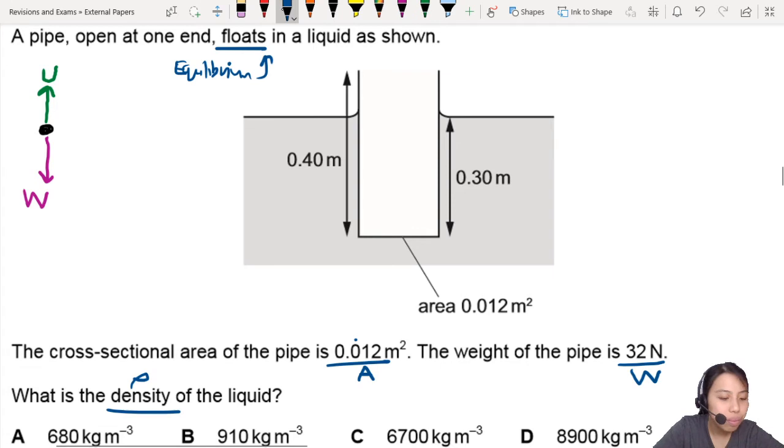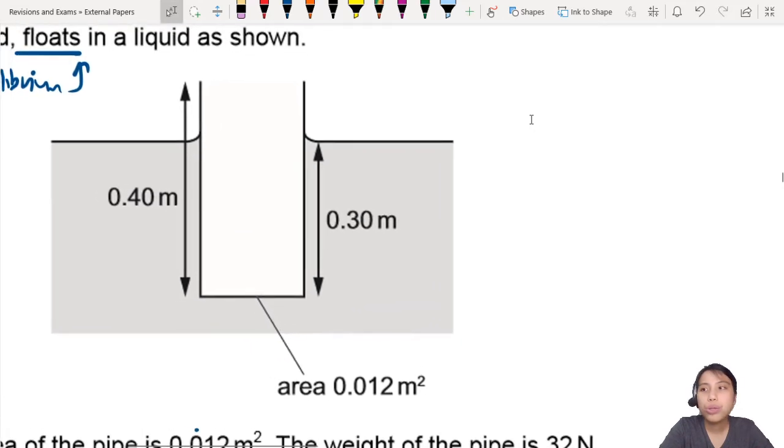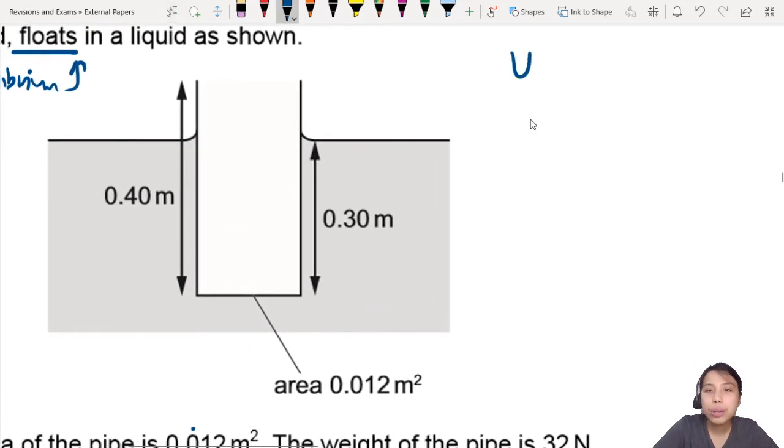So let's write it out on the side and we have this equation. So U equals to W because it is floating equilibrium. Upthrust, you have to remember the formula for it: that is ρVg, density of the fluid, the volume that is inside the fluid, and g is just gravitational constant. And W is given to us, right, 32.